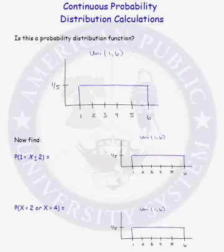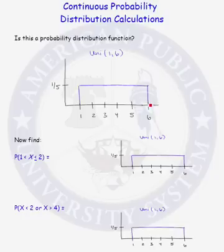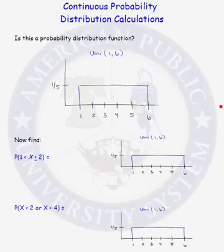Let's look at another function and determine whether it is a probability distribution function. Here our function is just a rectangular region. Is the function non-negative? Yes — here it would be 0, it becomes positive in the region from 1 to 6, and then it becomes 0 again. So yes, it is non-negative.